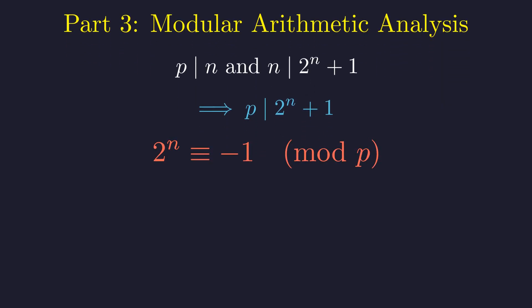This translates to a powerful congruence. 2 to the n is congruent to negative 1 modulo p. This single equation will unlock everything.